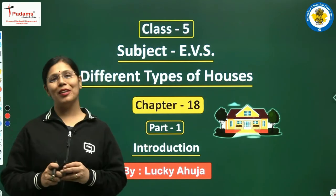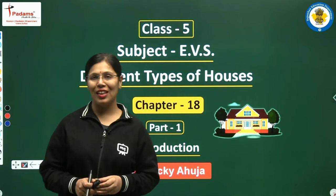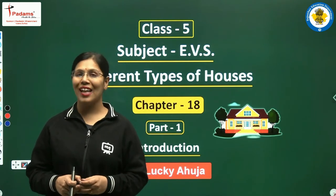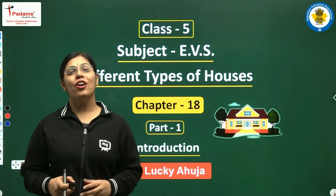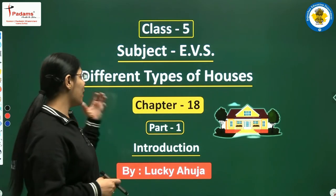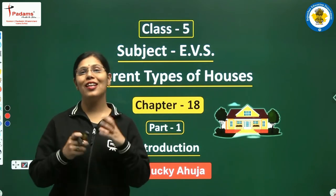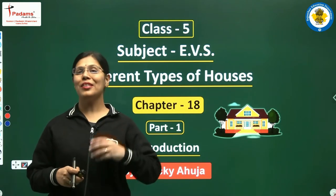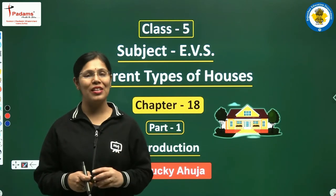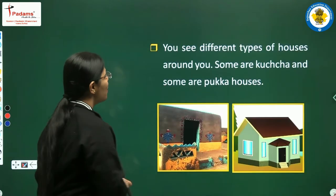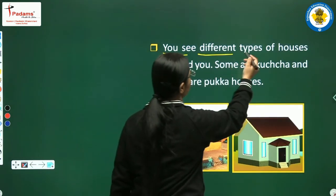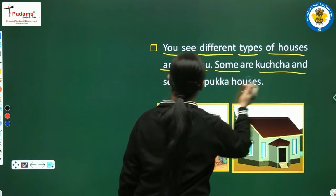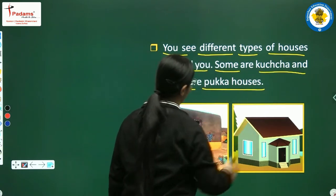Dear students, we have completed 17 chapters and today we start Chapter 18 on different types of houses. You see different types of houses around you — some are kaccha and some are paka houses.